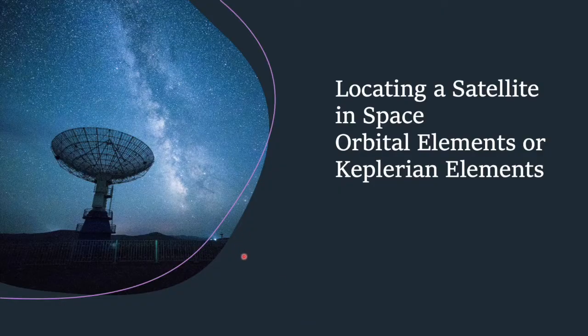Hello dear, welcome back. With the help of latitudes and longitudes, we can determine the location of any place or object over the surface of the Earth. But how do we determine the location of a spacecraft? What are the elements that are used to determine the location of a spacecraft in its orbit?